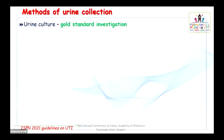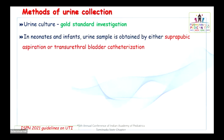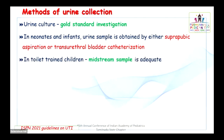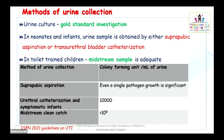Urine culture is the gold standard investigation of choice to diagnose UTI. In neonates and infants, urine sample is obtained by either suprapubic aspiration or transurethral bladder catheterization. In a toilet-trained child, advise them to take a midstream sample. Per the Indian Society of Pediatric Nephrology 2021 guidelines, even a single pathogen growth is significant when culture is done by suprapubic aspiration. By urethral catheterization in symptomatic children, 10,000 colony-forming units is taken as significant. For midstream clean catch, more than 100,000 colony count is required.